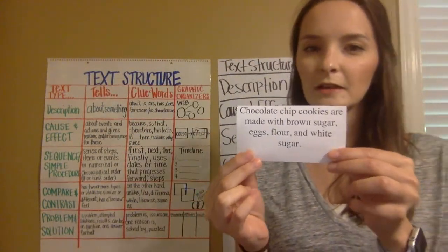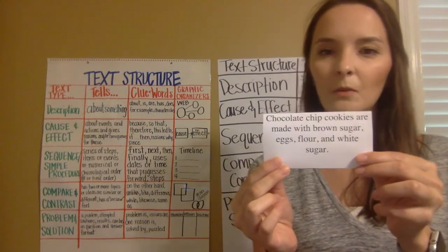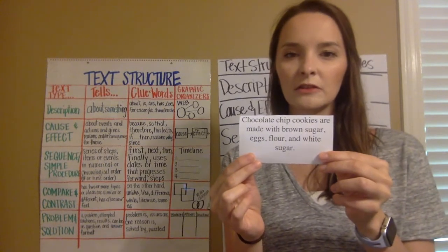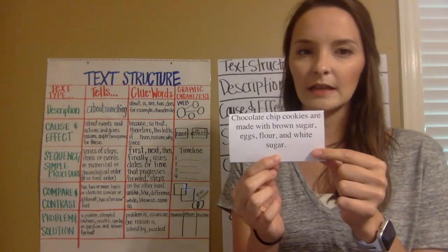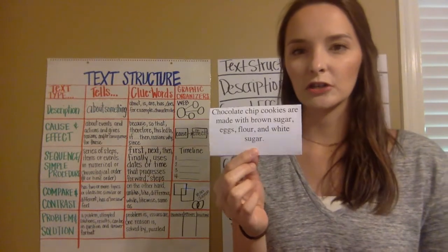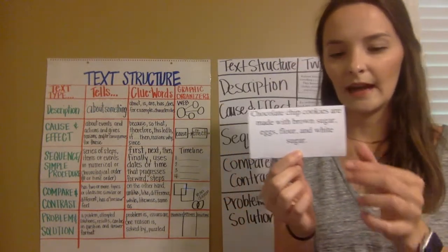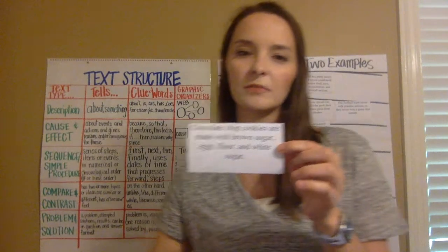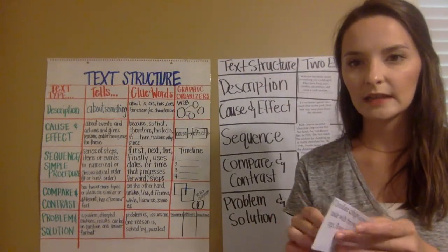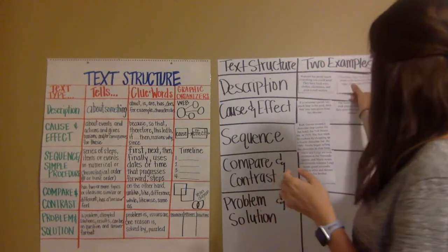Next card: Chocolate chip cookies are made with brown sugar, eggs, flour, and white sugar. It's listing all the things used to make chocolate chip cookies — it's telling us about something. If it tells us about something, we're using description — describing all the ingredients necessary to make chocolate chip cookies.